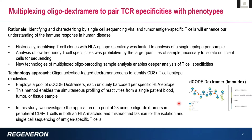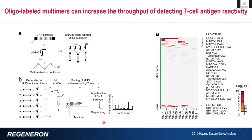It's a beautiful way to optimize for very small amounts of blood, especially if you're looking at clinical trial samples where frequently you have one, two, maybe three mils of blood total to profile rather than healthy donor controls where you could get a lot more. In the study I'm going to show you data from, we used a pool of 23 of these unique oligo dextremers to profile peripheral T cells in both an HLA-matched and mismatched fashion, and take them to single cell sorting to look at these antigen-specific T cells.